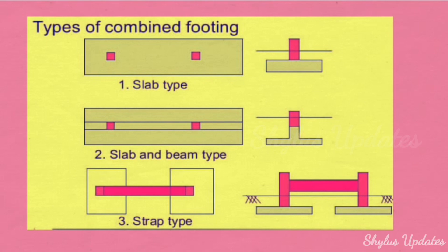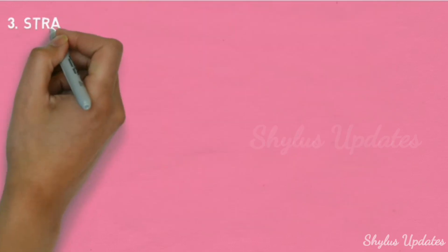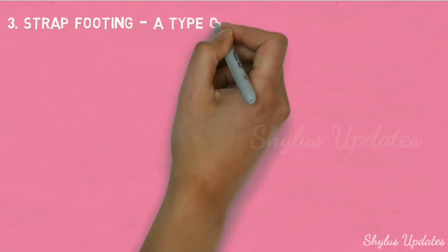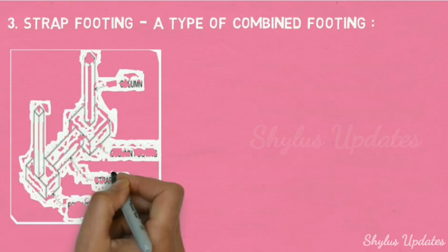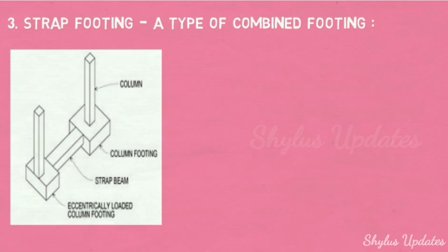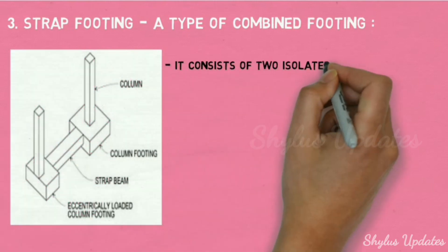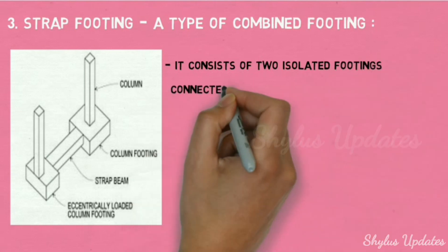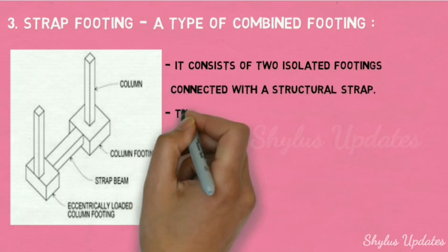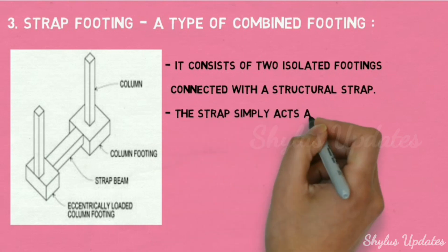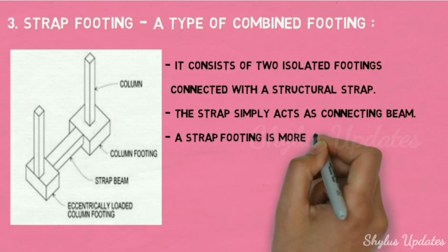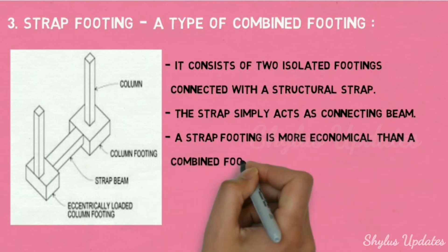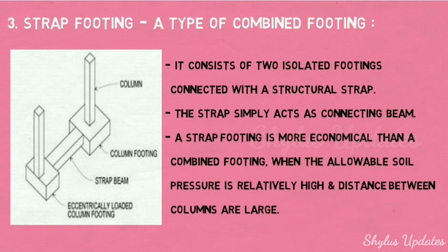Strap footing is a type of combined footing. It consists of two isolated footings connected with a structural strap that simply acts as a connecting beam. A strap footing is more economical than a combined footing when the allowable soil pressure is relatively high and the distance between columns is large.